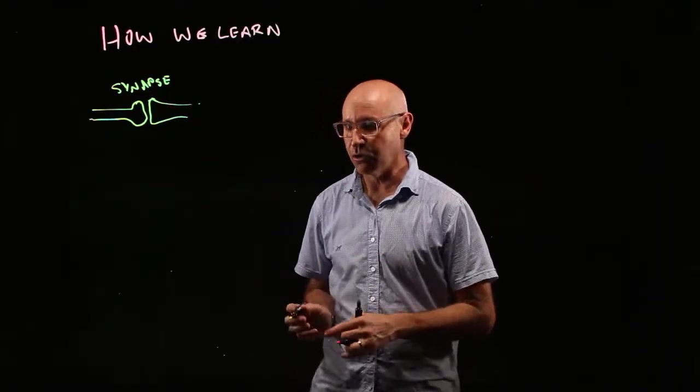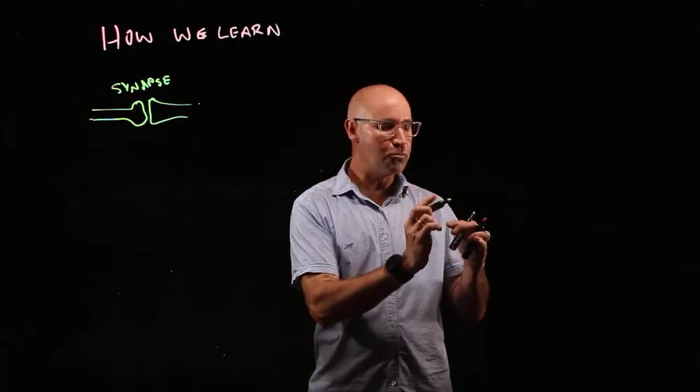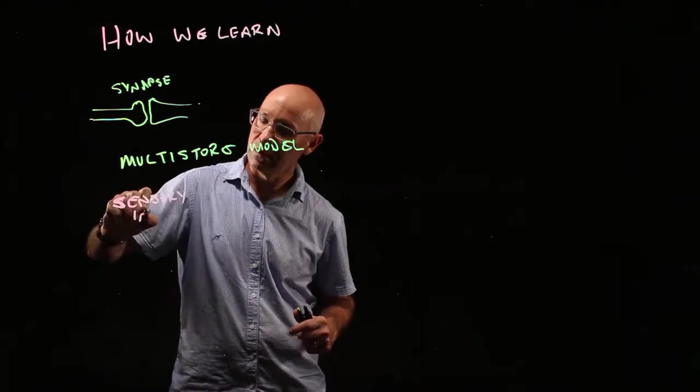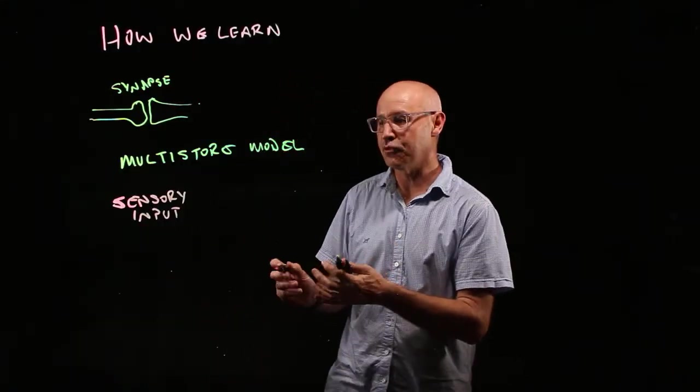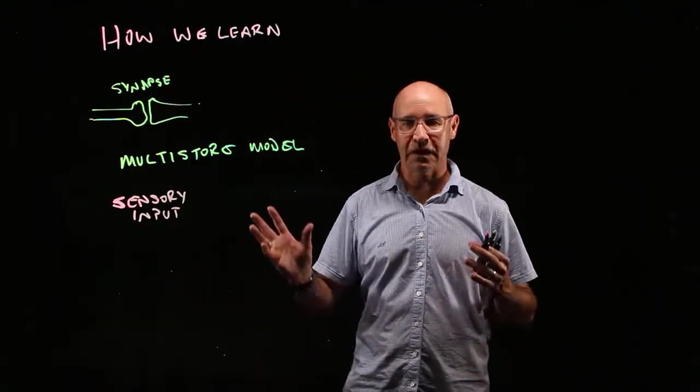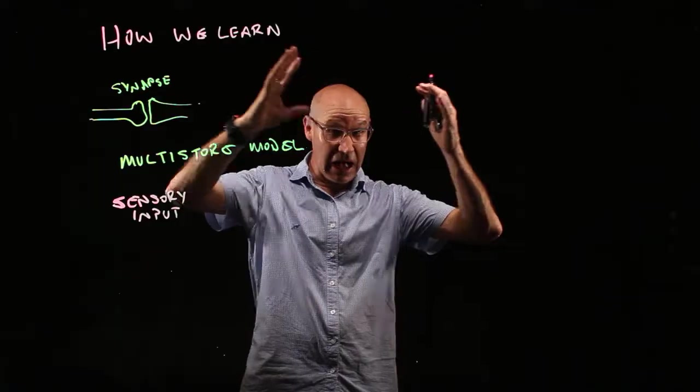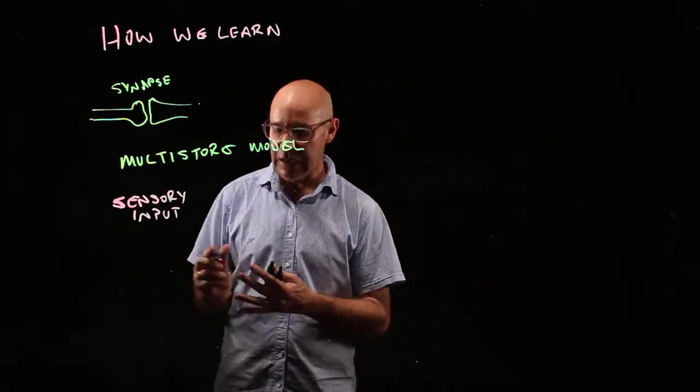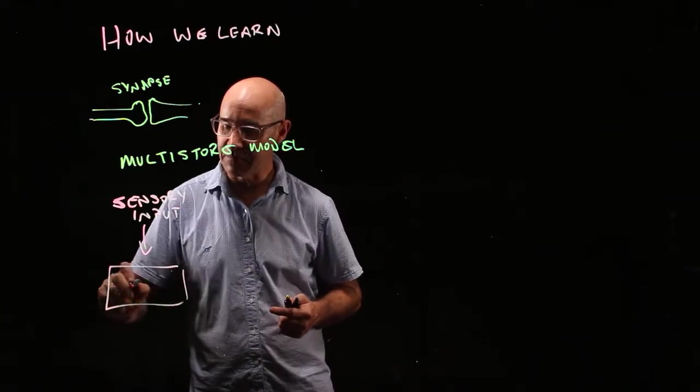I want to show you this model. It's called the multi-store model. So firstly we have sensory input. Now this sensory input comes from our environment, so our eyes and our ears and our other senses, and that goes into our sensory memory.